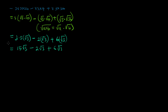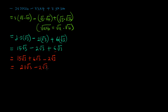So we have 15√3 plus 6√3 minus 2√3. We can add or subtract easily because they have the same root — just like combining like terms. So 15 plus 6 is 21√3, minus 2√3 gives us 19√3. That is our final answer for the first question.